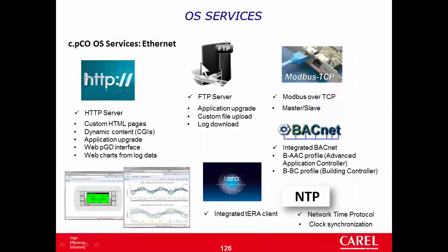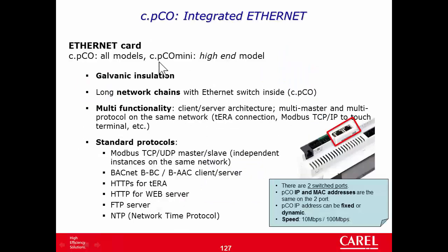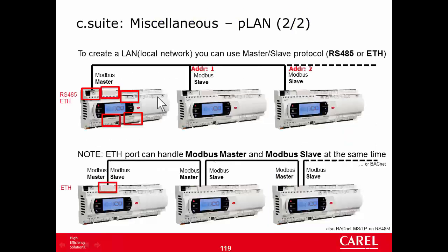Operating system services — Ethernet. The Ethernet card is available in all CPico models, and in CPico Mini only in the high-end model. It provides galvanic insulation. There is one Ethernet card with one IP and one MAC address. CPico has two switched ports with a built-in two-port switch, which allows long network chains — you can enter from one port and exit from the other without an external switch.